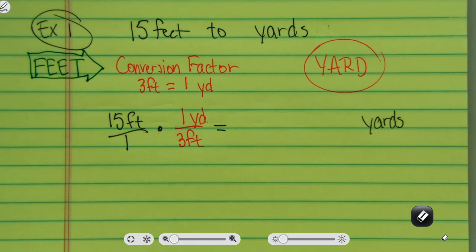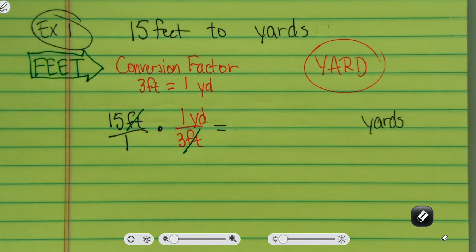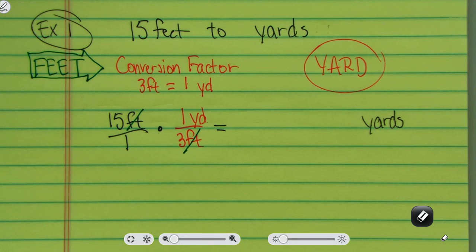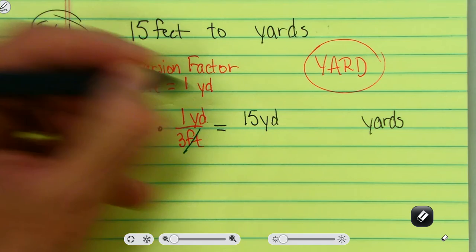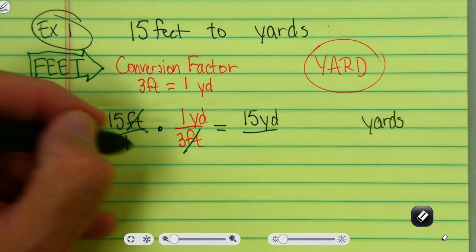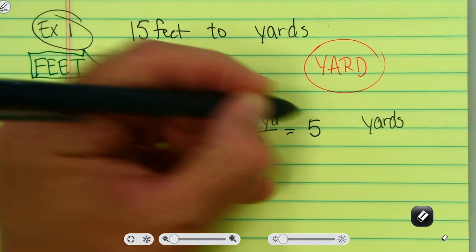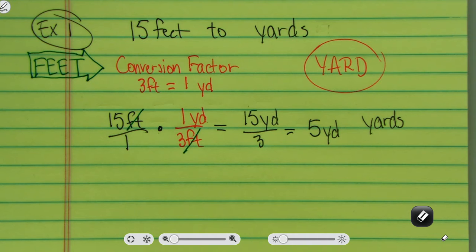The key to dimensional analysis is that feet and feet cancel. If this were longer than just two fractions, I would cancel those as well. Now it's just a multiplication problem: 15 times one yard is 15 yards over one times three. The feet are canceled, so one times three is three. Now 15 divided by three is five. So I've converted it to five yards. That's a pretty simple example of how to do dimensional analysis.